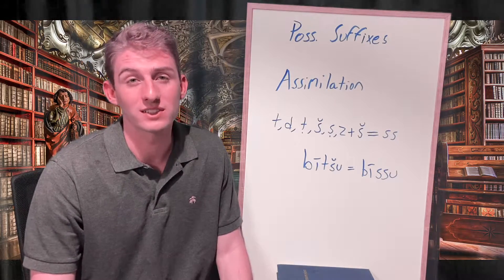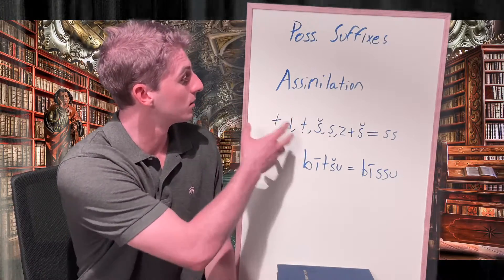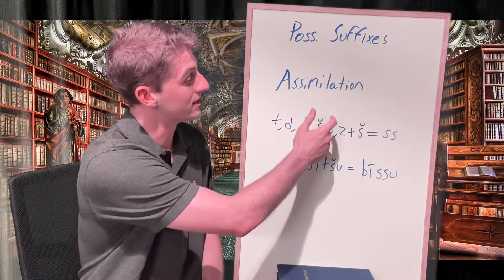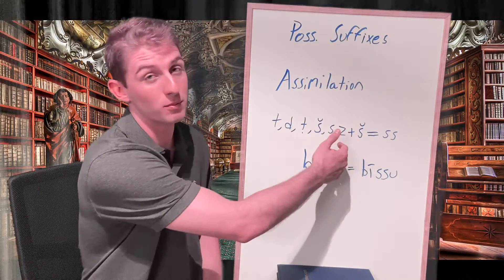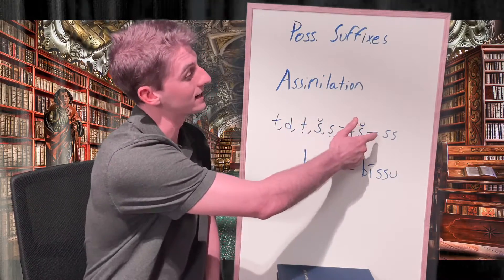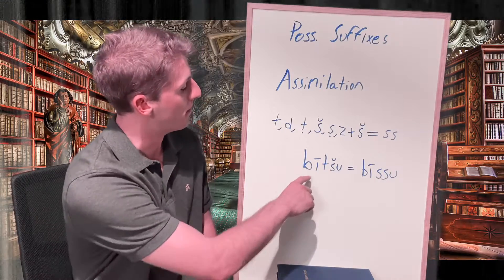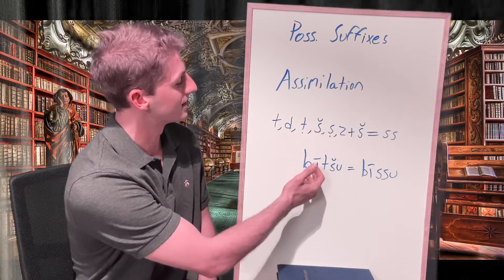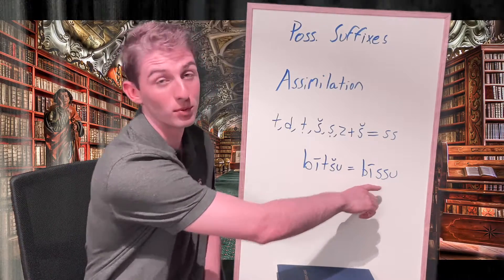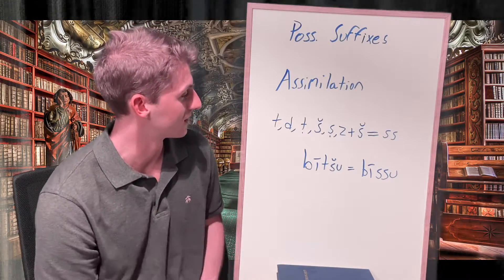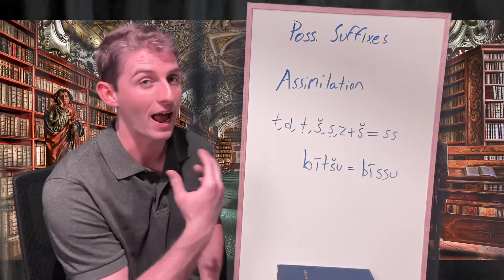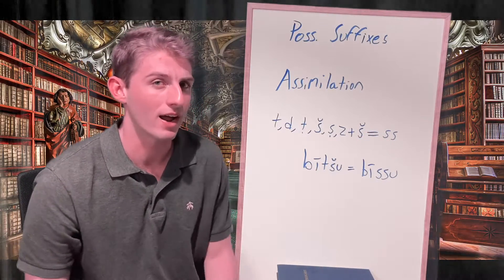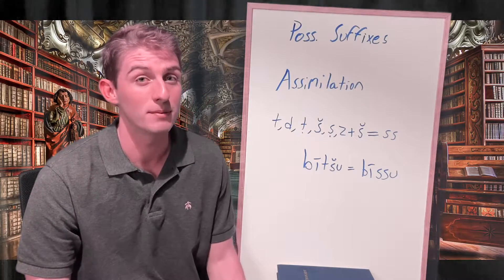It's important to note that assimilation sometimes occurs when possessive suffixes are added. Whenever 't,' 'd,' emphatic 't,' 'š,' 'ṣ,' or 'z' is brought into contact with the 'š' of a possessive suffix, these assimilate to give a double 's' sound. So 'bīt' from 'bītum' coming into contact with the suffix 'šu' assimilates to give 'bēssu' with a double 's.' This applies to all possessive suffixes beginning with 'š': šu, ša, šunu, and šina. So if you see an unexpected double 's,' it could be a possessive assimilation.